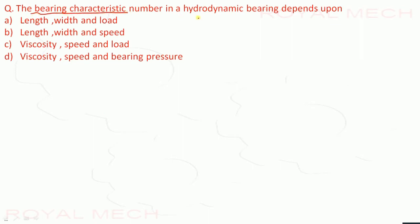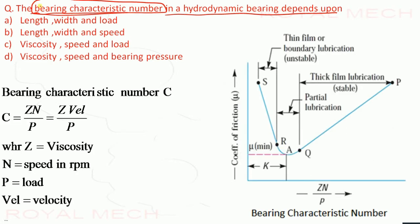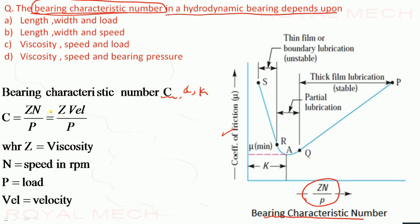The bearing characteristic number in a hydrodynamic bearing depends on viscosity, speed, and load. The graph of coefficient of friction versus bearing characteristic number is Zn/P, also denoted by C, alpha, or K, where Z is viscosity, N is speed in RPM, and P is load. This concludes that the bearing characteristic number depends upon viscosity, speed, and load.